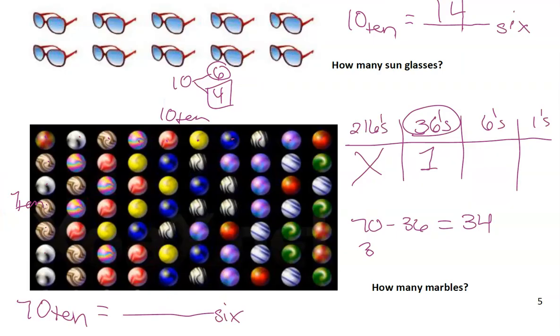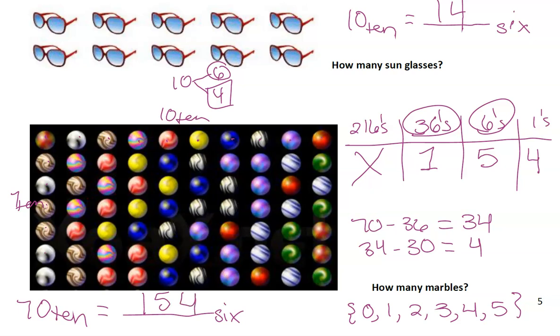34. How many groups of 6 are there in 34? There are five groups of 6, and remember, 5 is a good numeral because if you are in base 6, your numerals are 0, 1, 2, 3, 4, and 5. So we have five groups of 6. Five groups of 6 is going to make 30. We have 4 left over. That means we have four singles. So 70 in base 10 is the same as 1, 5, 4 in base 6. And that is how we convert from base 10 to base 6.